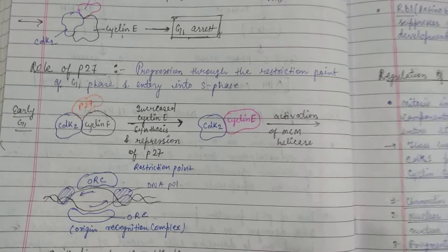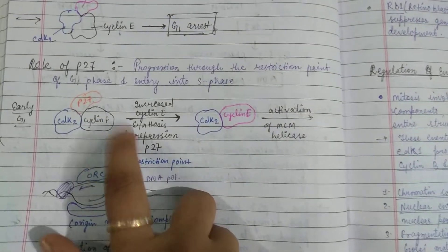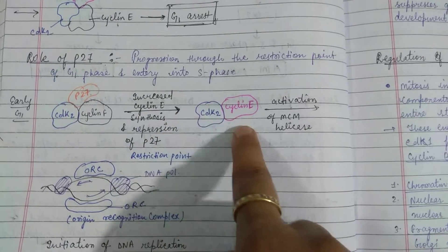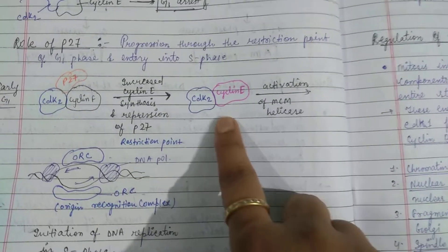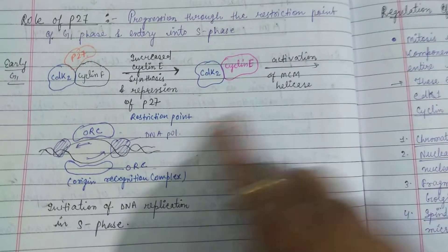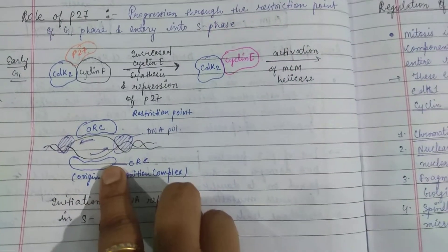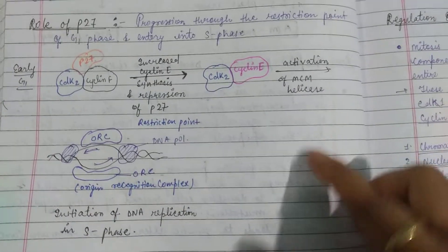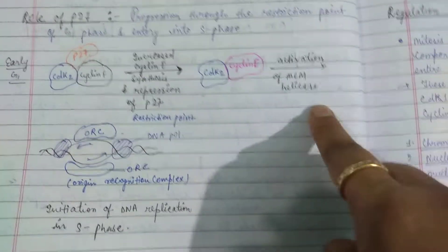Then we see P27's role. This is CDK2 and cyclin E. When cyclin E synthesis is increased, it activates MCM and Helicase. This is mini-chromosomal maintenance. This is the synthesis phase in S phase, so G1 is crossed into S phase.